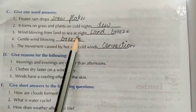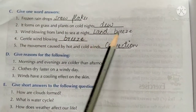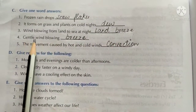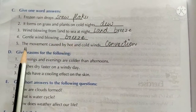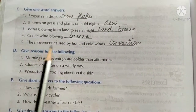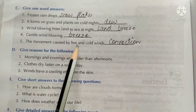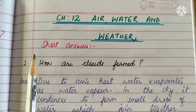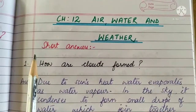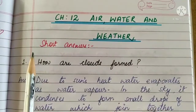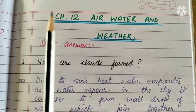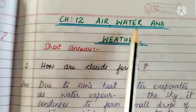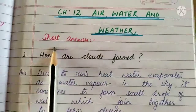Three: wind blowing from land to sea at night — land breeze. Four: gentle wind blowing — breeze. Five: the movement caused by hot and cold winds — convection.